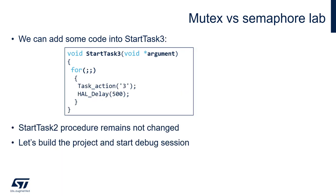Within StartTask3, the function body of new task 3, there will be a task_action which sends 3 over SWO, followed by HAL_Delay with argument 500. We will keep our StartTask2 function body the same as in the previous example, without any modifications.